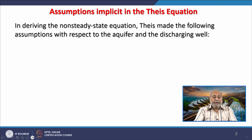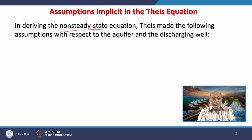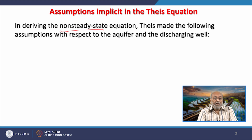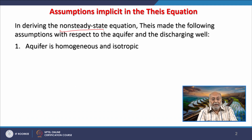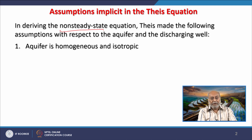The challenging part is when we are working in non-steady conditions for non-steady equations. As we know, the Theis equation is for non-steady conditions. Theis made a few assumptions with respect to the aquifer and about a discharging well when pumping is being done. The Theis equation assumes that the aquifer is homogeneous and isotropic — theoretically it might be possible but practically it is not. Therefore, every equation including Darcy's law, Theis equation, Thiem equation, and Jacob equation will have limitations.